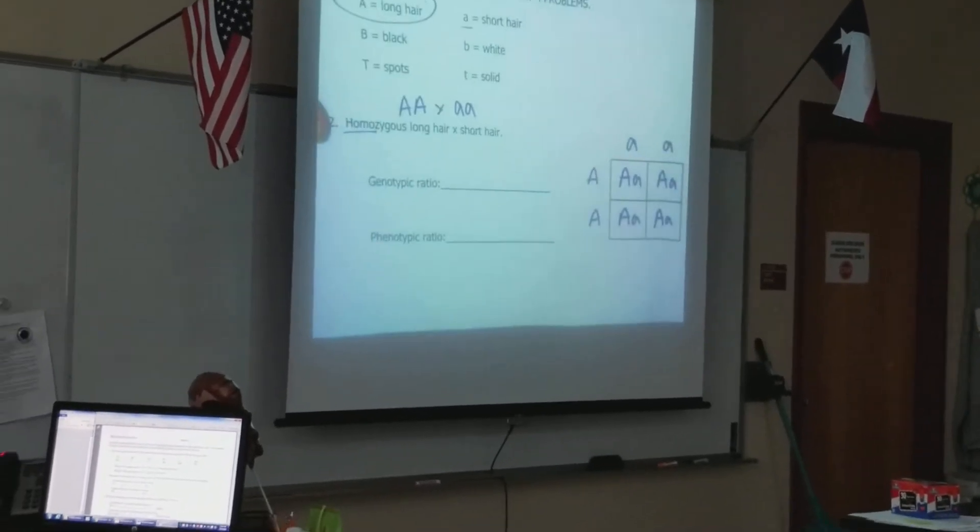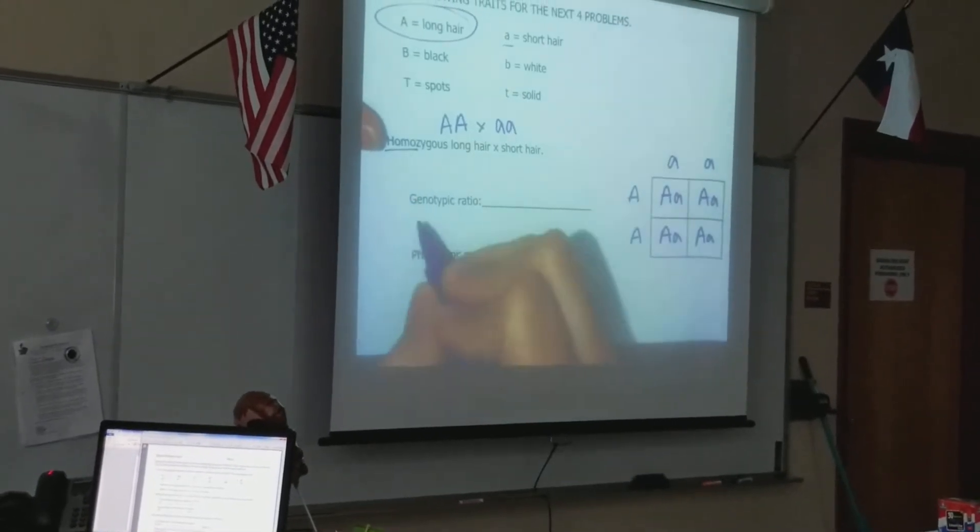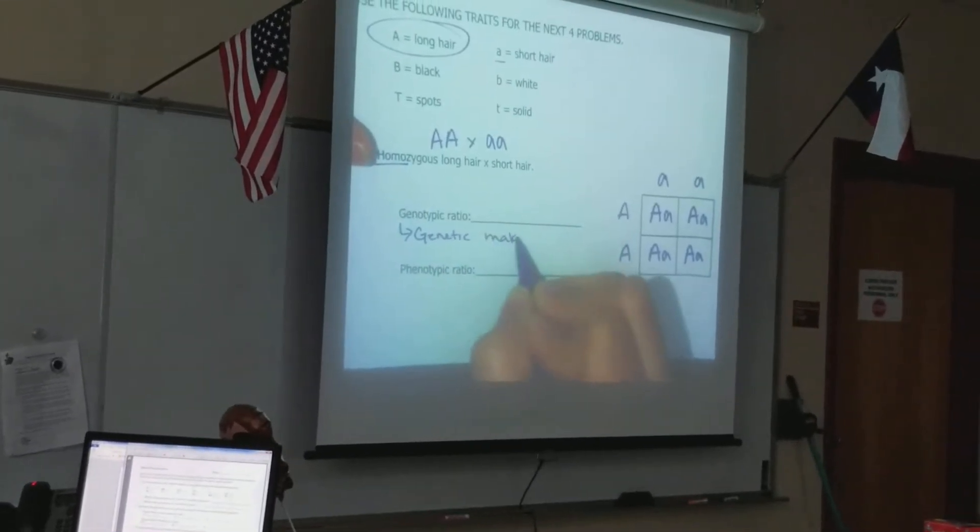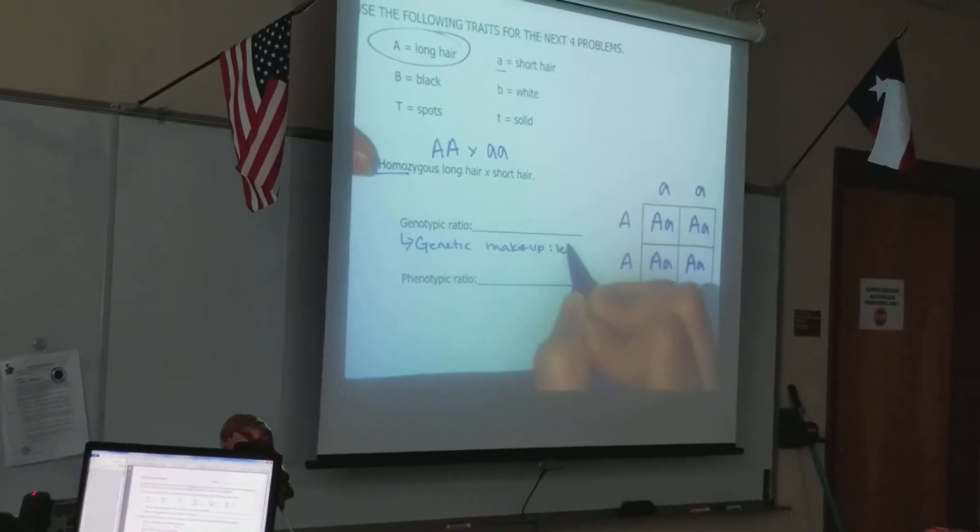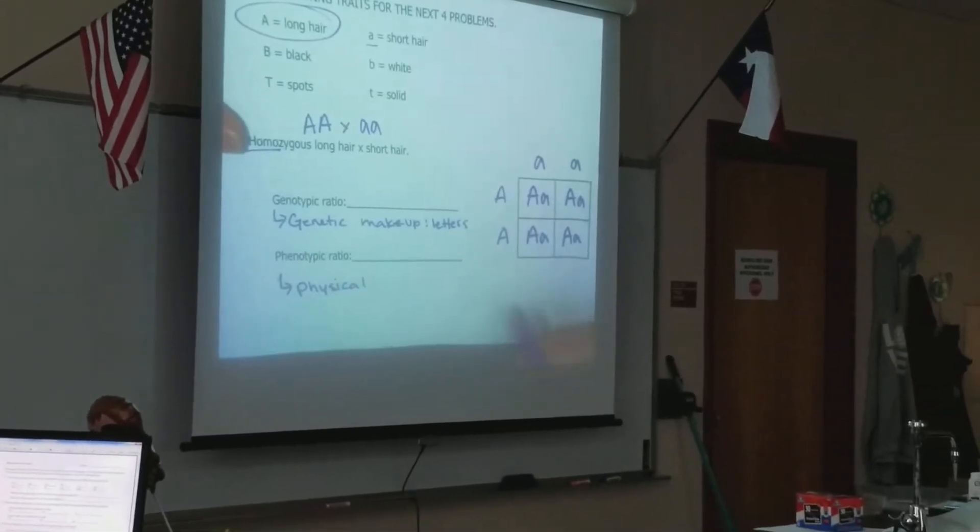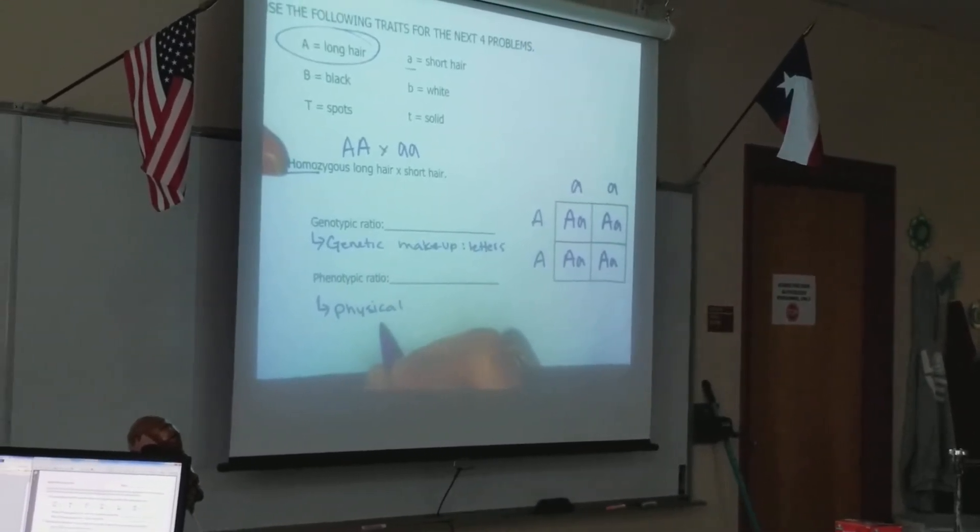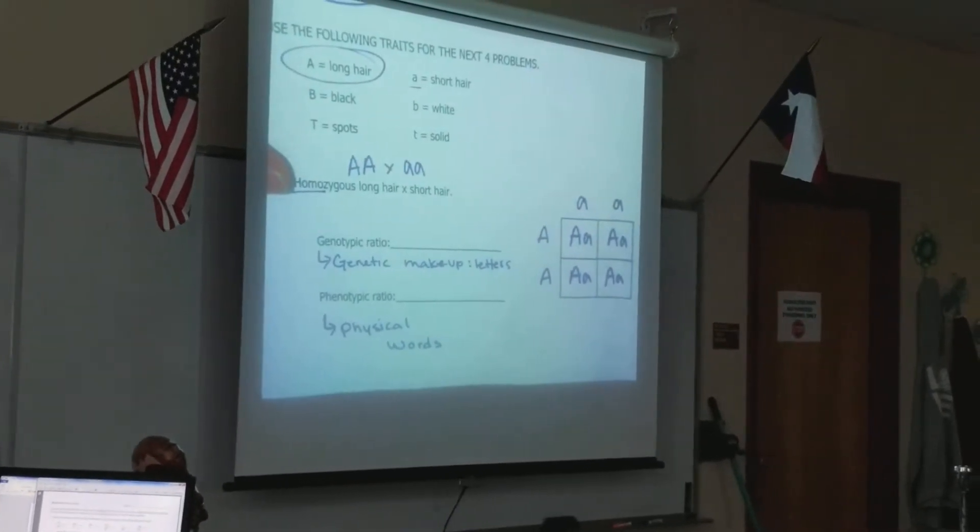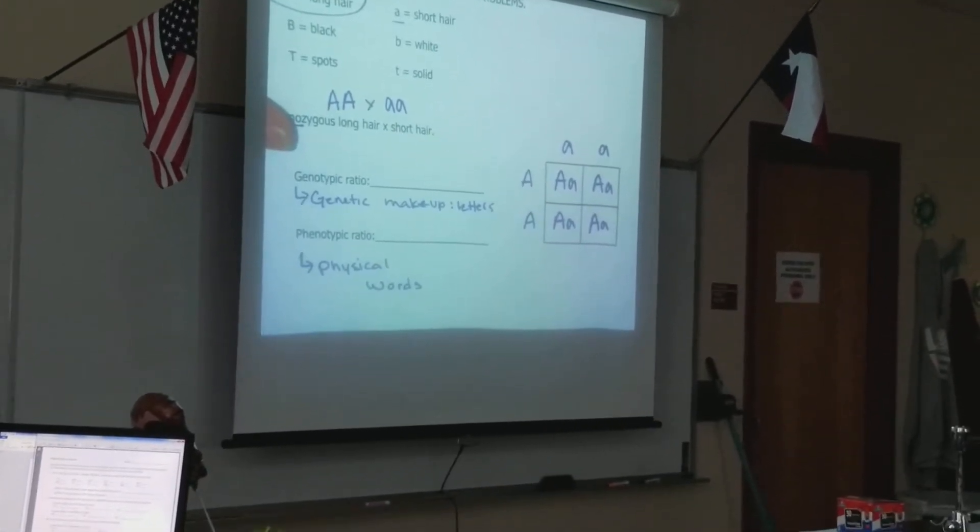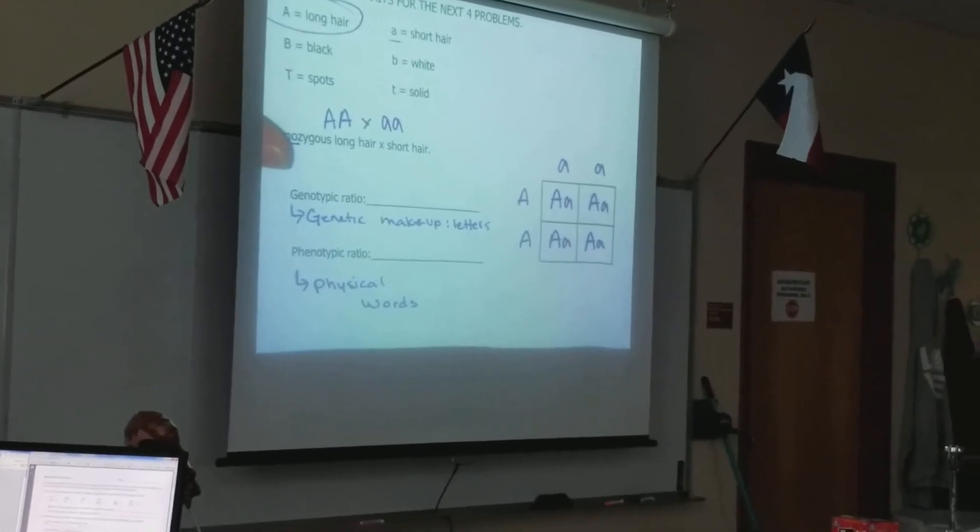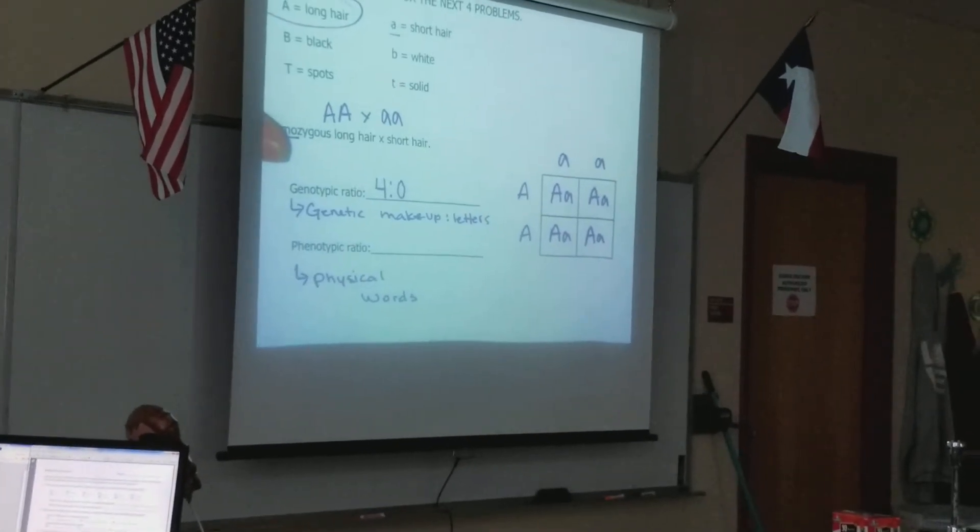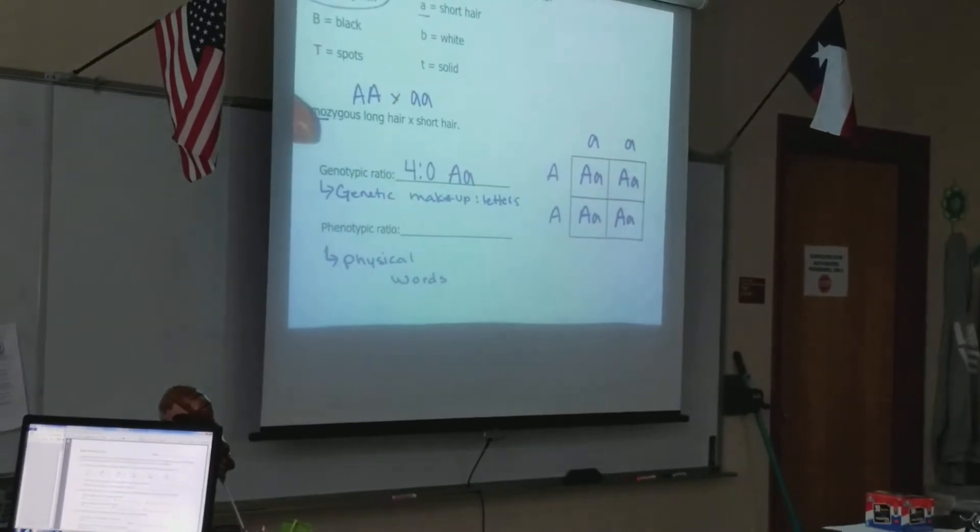And we distribute our allele frequencies to come up with our possible offspring. It's asking you to write a ratio. So here's what you do for genotype. Genotype is going to be the genetic makeup. So these are going to be the letters. So what are my possibilities here? Do I have many possibilities for genotypes or are they all the same? Okay, so I'm going to put four out of zero because we're writing in ratio are going to be heterozygous, one of each.